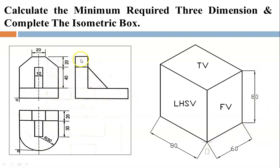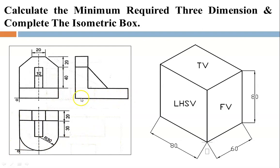Coming to the left-hand side view, the dimensions are not directly given, but the height of the front view is taken as the height of the side view, so it becomes 80 mm. Always project the vertical dimensions of the front view and top view. The vertical dimension of the front view is 80, so the height of the LHSV is 80. The vertical dimension of the top view is 20 plus 30 plus 30, which is again 80, and that becomes the base of the LHSV. These are the required dimensions for the isometric box.